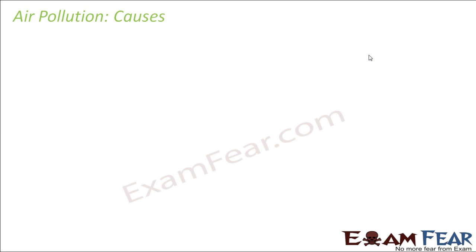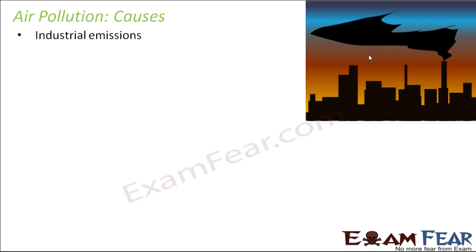So now let us look at what causes air pollution. First is industrial emissions. Factories and industries emit a large number of poisonous gases. Some of the gases produced include carbon monoxide, sulfur along with oxygen and nitrogen. They also produce several harmful chemicals like furans and dioxins, which even have the capability to mutate human genes. These harmful gases and chemicals are normally produced by burning plastics in plastic factories.